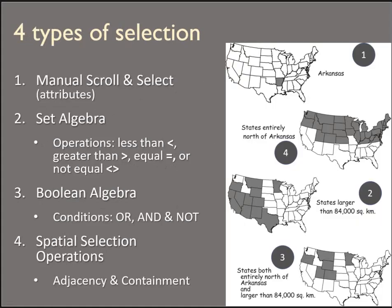There are four basic ways to make selections. You can do it manually by clicking on things or using shift-select in the attribute table. You can use set algebra — for example, choosing all states with a population greater than or less than some value. Boolean algebra involves making selections like this AND this — for example, land ownership equals private AND land cover type equals prairie. And then there are spatial selection operations, like choosing everything outside of a feature or within 100 meters of a feature.